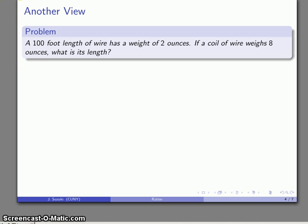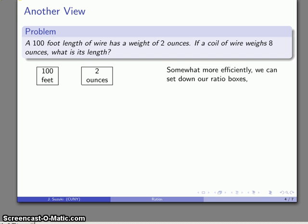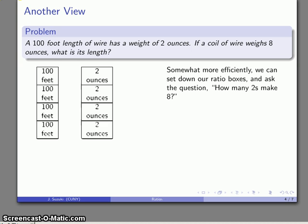We could take a view of this problem from another angle. Same problem as before, but this time more efficiently we can just start by setting down our ratio boxes. The real question was, I want to get eight ounces of weight over here. How many of these two ounce boxes is going to be enough to make eight? How many twos make eight? The answer to that, four twos make eight. And I can just fill those out right away. Once again, I'm back at my same solution. Eight ounces of weight, 400 feet of wire, they are the same thing.